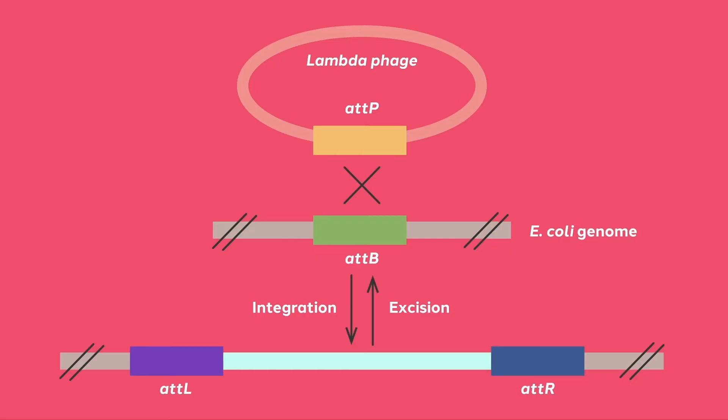If the phage senses that the bacteria is under stress, it will excise itself. Upon excision, at L and at R are converted back to at P and at B, and the phage DNA is removed from the bacterial chromosome.